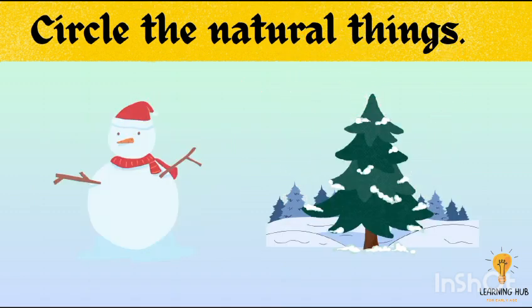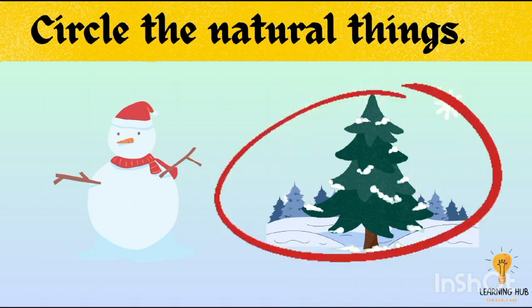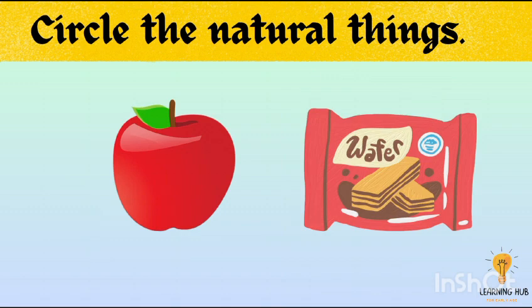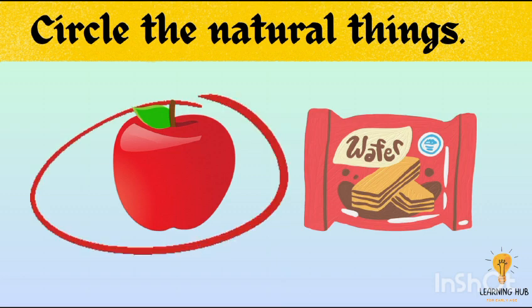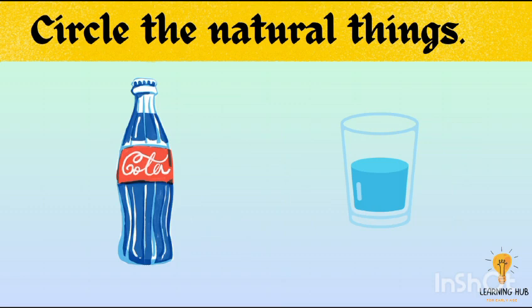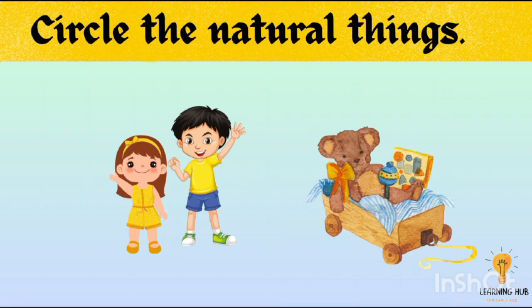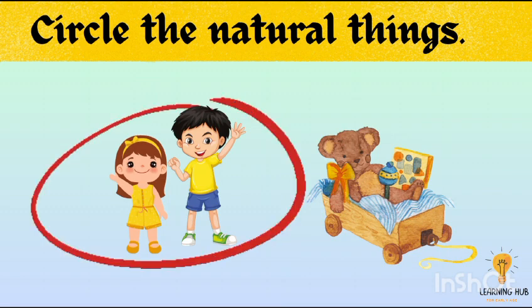In this picture, snow and snowman. Snow is a natural object. Apple or biscuits? Apple is a natural object. Cold drink or water? Water is a natural thing. Toys and human beings? Human beings are created by Allah Almighty.